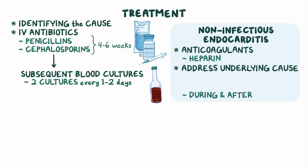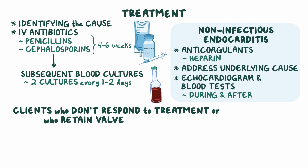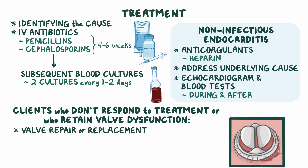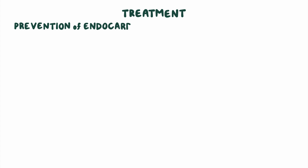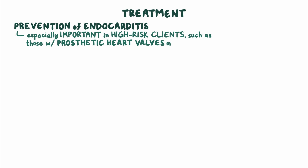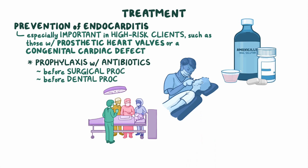During and after treatment, clients are followed up with echocardiogram and blood tests. Clients who don't respond to treatment or who retain valve dysfunction may require more intense interventions, such as valve repair or replacement surgery. Prevention of endocarditis is especially important in high-risk clients, such as those with prosthetic heart valves or a congenital cardiac defect. This usually involves prophylaxis with antibiotics like amoxicillin given in certain high-risk situations, such as before surgical or dental procedures.